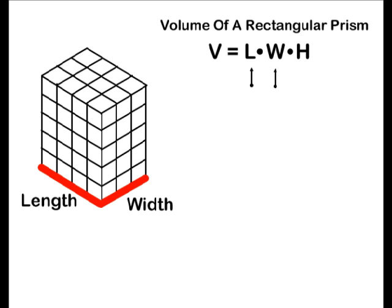The length and the width of the rectangular prism are always at the bottom of the shape. These two dimensions make up the base of the rectangular prism. In this case, the length is 4 and the width is 3.